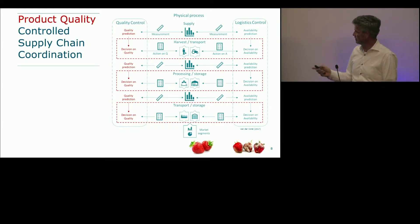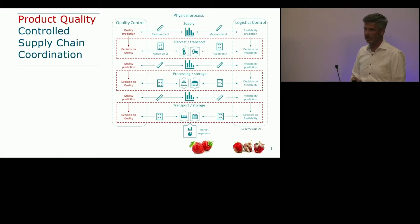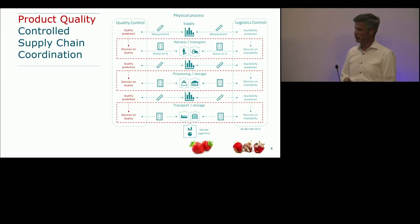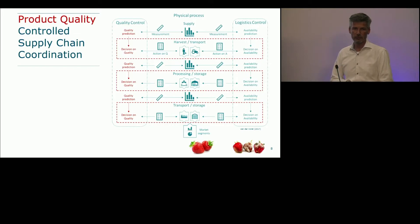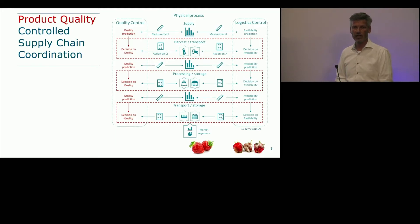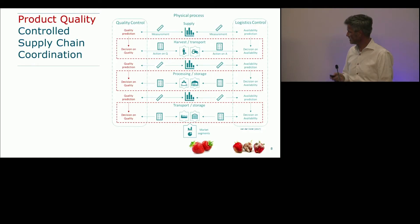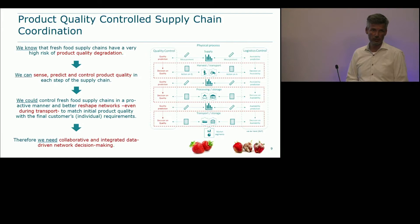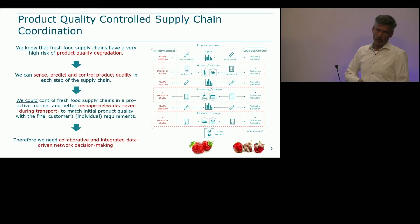The big change is: what if we are also able to predict quality and make decisions based on the fact that quality changes over time? We do not only prevent decay, but we know that a strawberry is a biological product and one strawberry is not the same as another — quality will always differ. What if I have that knowledge and can use it during supply chain optimization? That is essentially what we are researching.